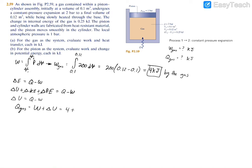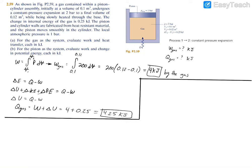That gives us heat transfer equal to 4 kilojoules plus 0.25 kilojoules, which is the change in internal energy as given by the problem, resulting in 4.25 kilojoules. For part B we're asked to find the work and change in potential energy, this time looking at the piston as the system rather than the gas.